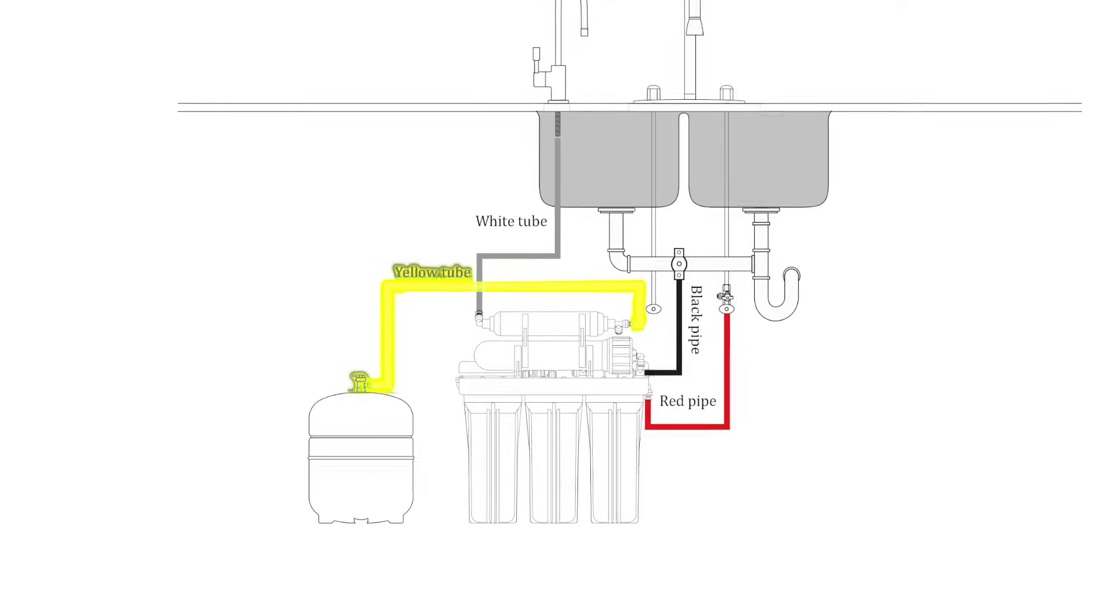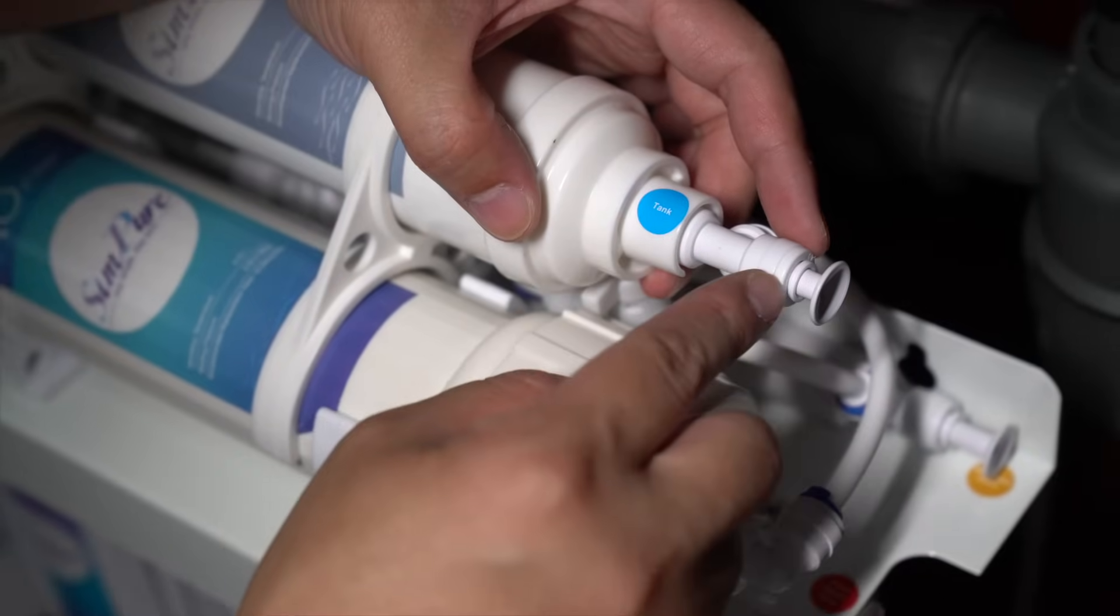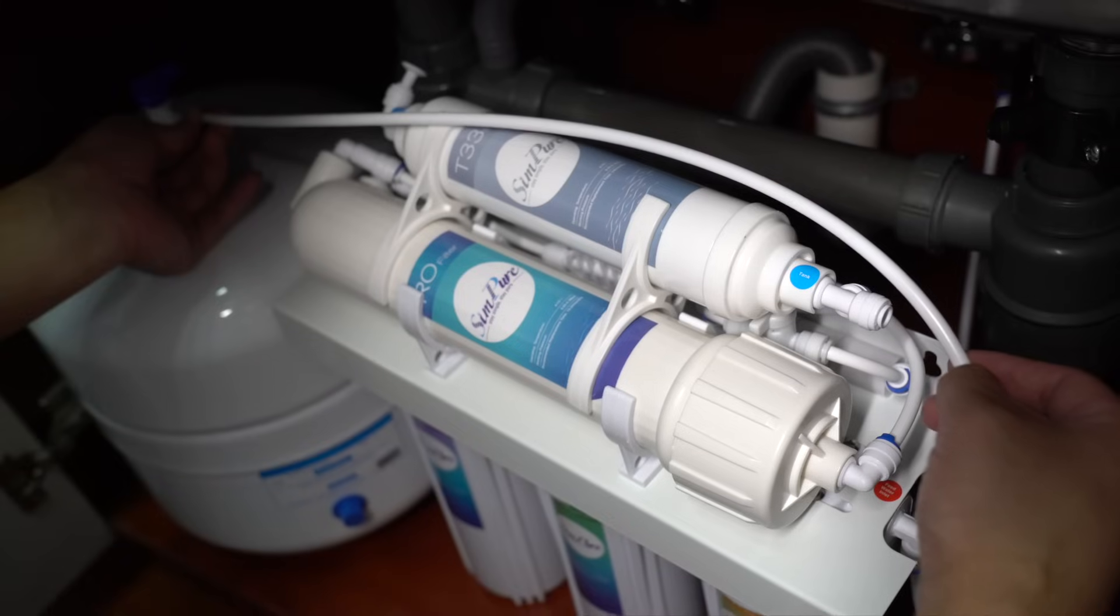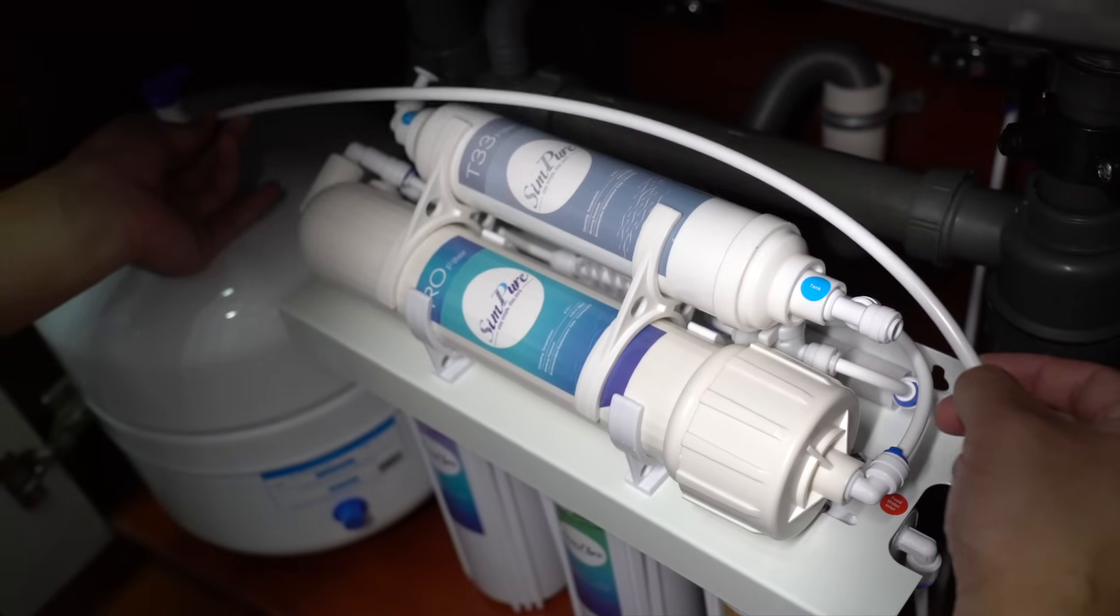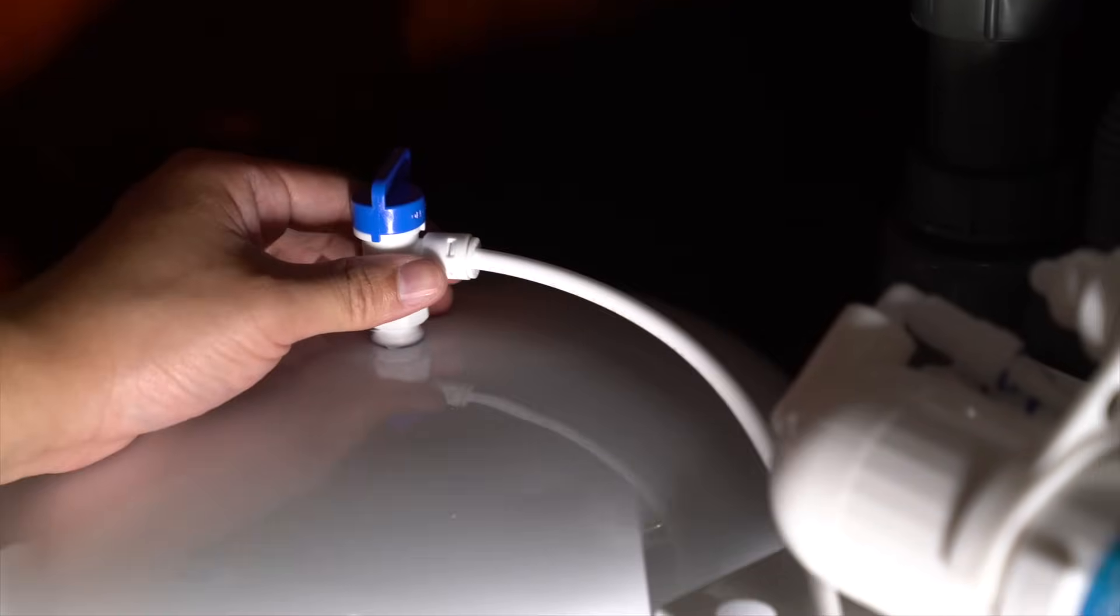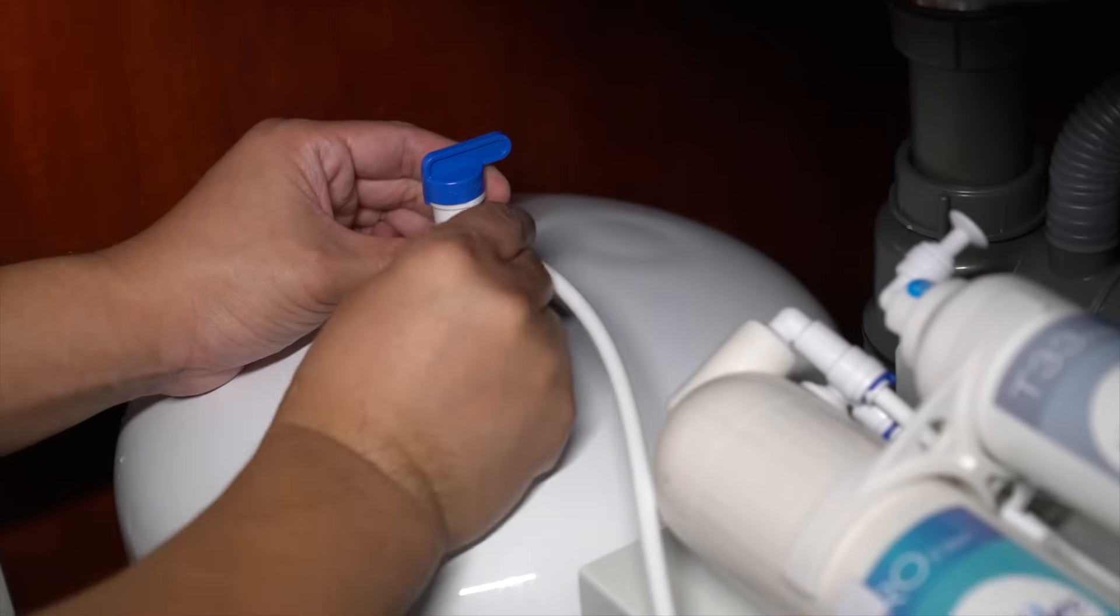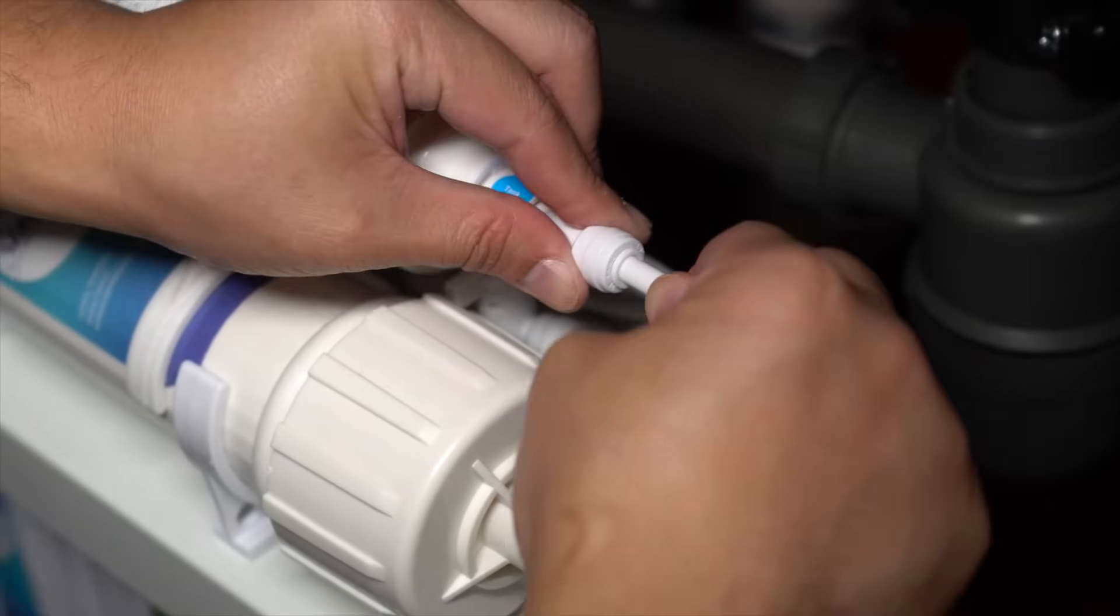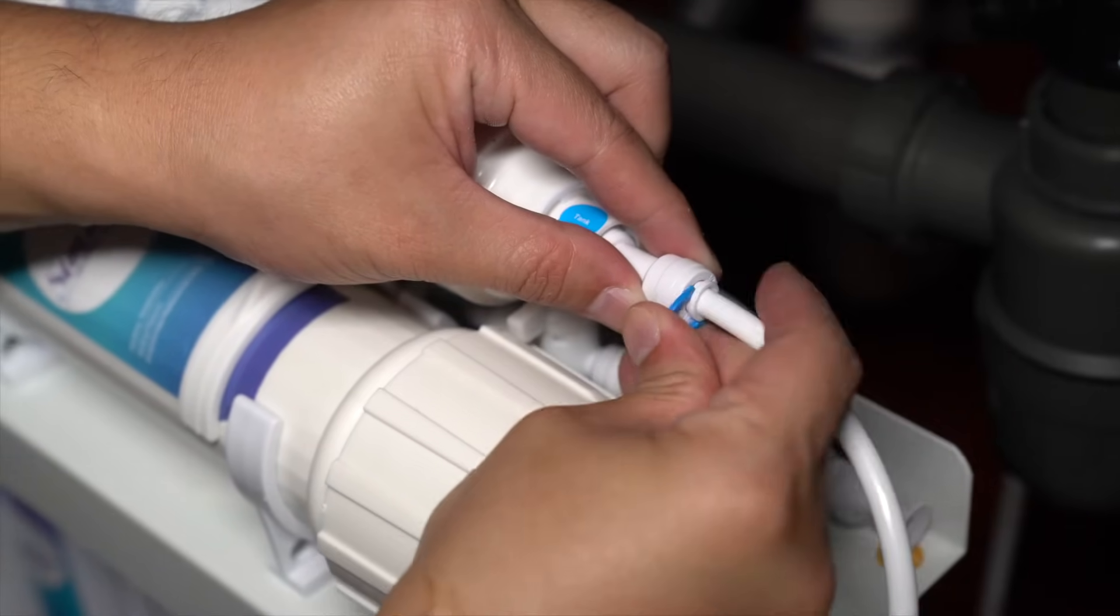Connecting the pressure storage tank. Select the appropriate length of PE2 and cut it off. Insert it into the T1 pressure tank connection and the other end into the pressure tank ball valve. Fit blue locking clips to both tube connections.